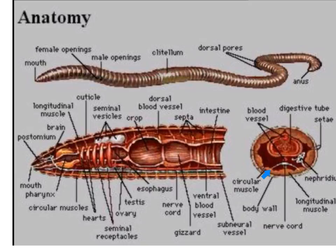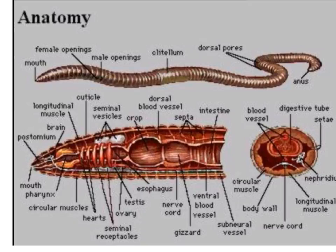As we look at this cross-section, the body surface secretes a substance known as cuticle by the epidermis. This is a mucus layer that serves two functions: first, it helps the earthworm move through the soil as a lubricant, and second, it helps prevent the earthworm from drying out due to its cutaneous breathing.